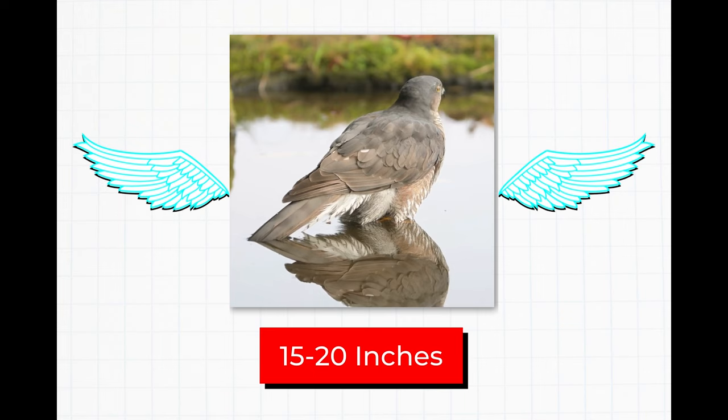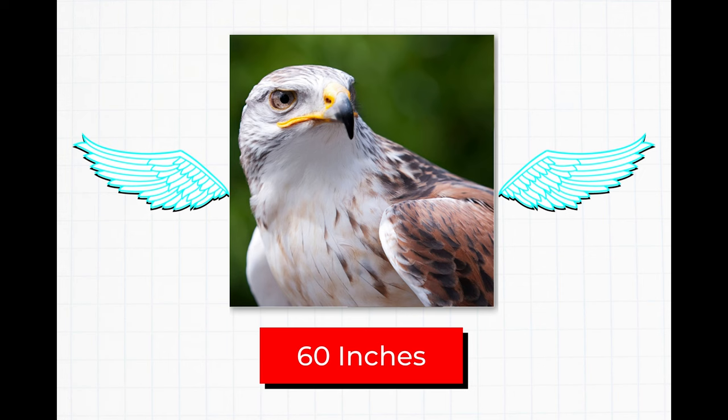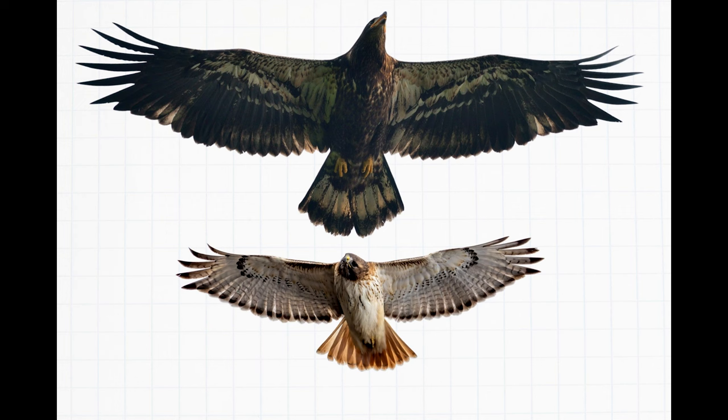Meanwhile, the wingspan of a ferruginous hawk can reach up to 60 inches. That said, the larger eagles possess wingspans almost double or triple the size of most hawk species.